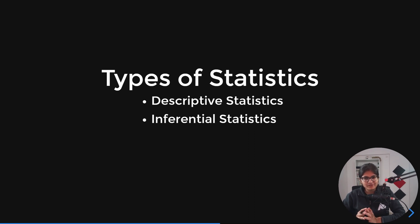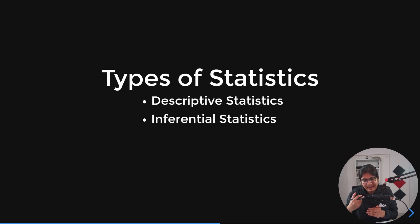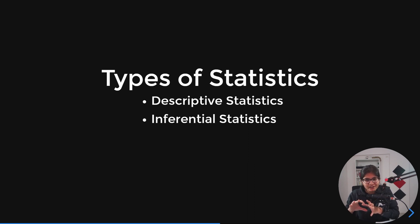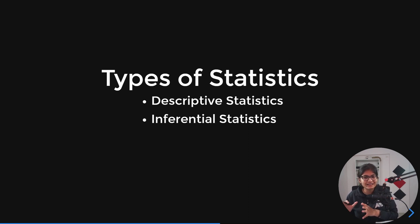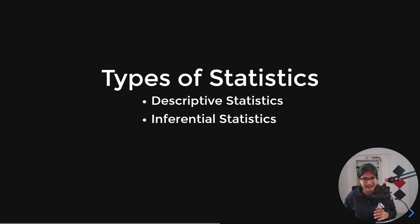The very first type is called descriptive statistics. As the name suggests, if I provide you data, you need to give me a description of that data. By description, I mean some kind of data analysis — where you talk about mean, median, and mode. I'll cover all these terms in depth in the next upcoming parts of the videos, but here I want to give you a gist of what the different types of stats are and what is included in the descriptive part versus the inferential part.